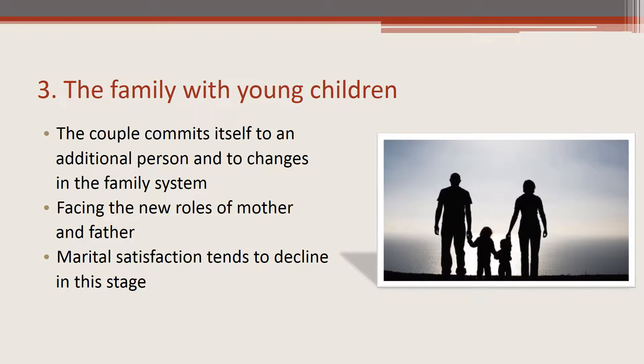In the third stage of the family life cycle, the family with young children, the couple commits itself to an additional person or persons and to changes in the family system. Spouses face the challenge of the new roles of mother and father, as well as those of husband and wife. Marital satisfaction tends to decline in this stage, but for some couples in the child-rearing years, marital satisfaction increases.